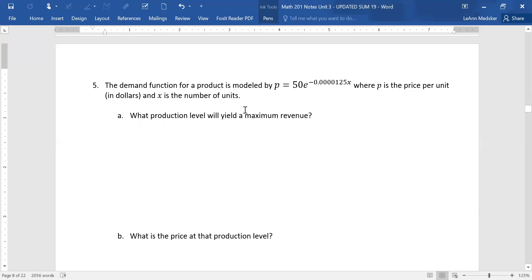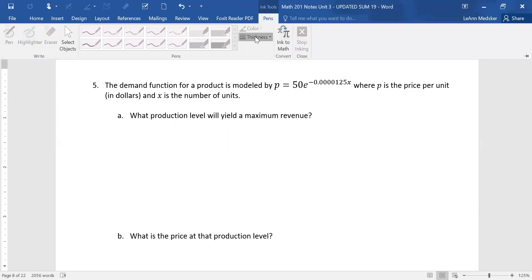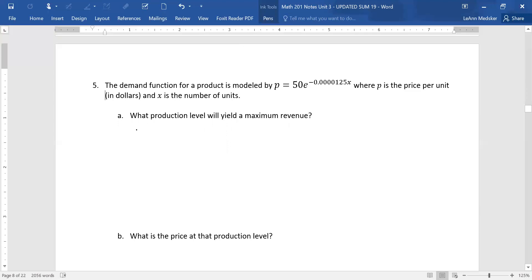What production level will yield a maximum revenue? So we have to have our revenue equation, and we're going to be taking a derivative to maximize it. And then we're looking for the production level, which has to do with the amount of things that we're making and selling. So we've got the little P. So if we want to make it a big R, you times it by X. This is a little different than our polynomials, because you can't distribute that X to the E part.